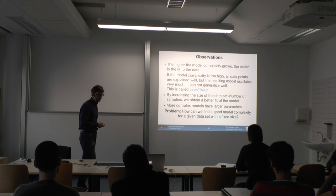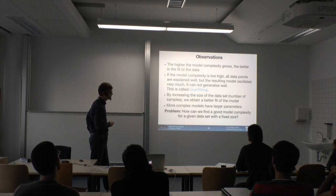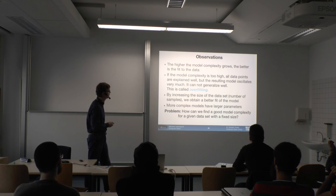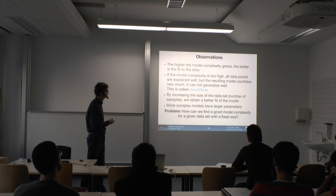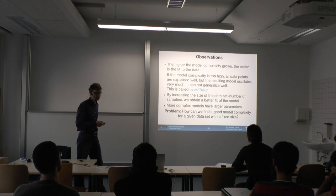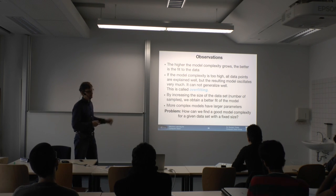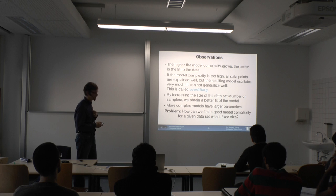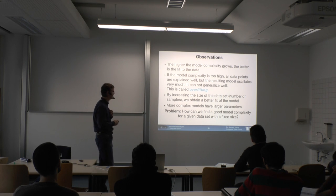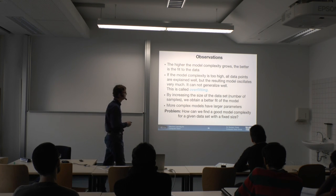These are the key observations: the higher the model complexity, the better the fit to training data. But we can't increase complexity forever — if it's too high, all data points are fit well but the resulting model oscillates heavily. This is overfitting. The problem with overfitting is that the model cannot be used for prediction on new test data, since it's very unlikely the test data will be explained well. We can increase the data set size, but if we can't do that, we need other solutions.